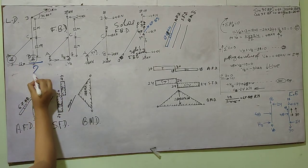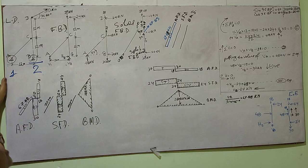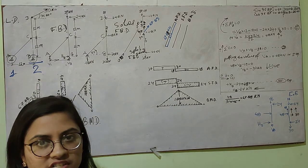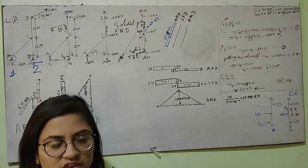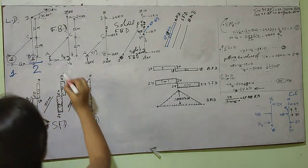This is a hinge support, so it has two reaction components. This looks like a hinge but it is a link support, so it will have only one reaction component. The number of equilibrium equations is three: Sigma H equals zero, Sigma V equals zero, and Sigma M equals zero.